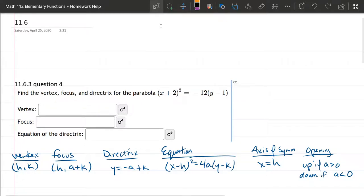Alright, our next question here, we're going to find the vertex, focus, and directrix of this parabola. So the parabola is (x + 2)² equals negative 12 times (y + 1).